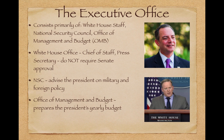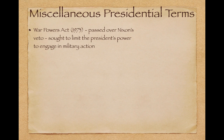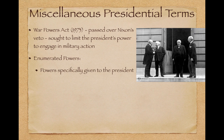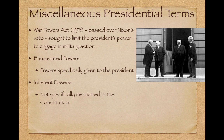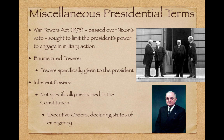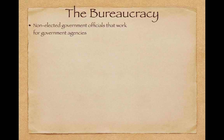The NSC advises the president on military and foreign policy. The Office of Management and Budget prepares the president's yearly budget — by law, the president is required to prepare a budget every year, and the OMB plays an instrumental role. The biggest predictor for funding for an agency is last year's budget. The War Powers Act of 1973 was passed over Nixon's veto and sought to limit the president's power to engage in military action. Enumerated powers are specifically given to the president; inherent powers — such as issuing executive orders and declaring states of emergency — are not specifically mentioned in the Constitution but the president can use them.